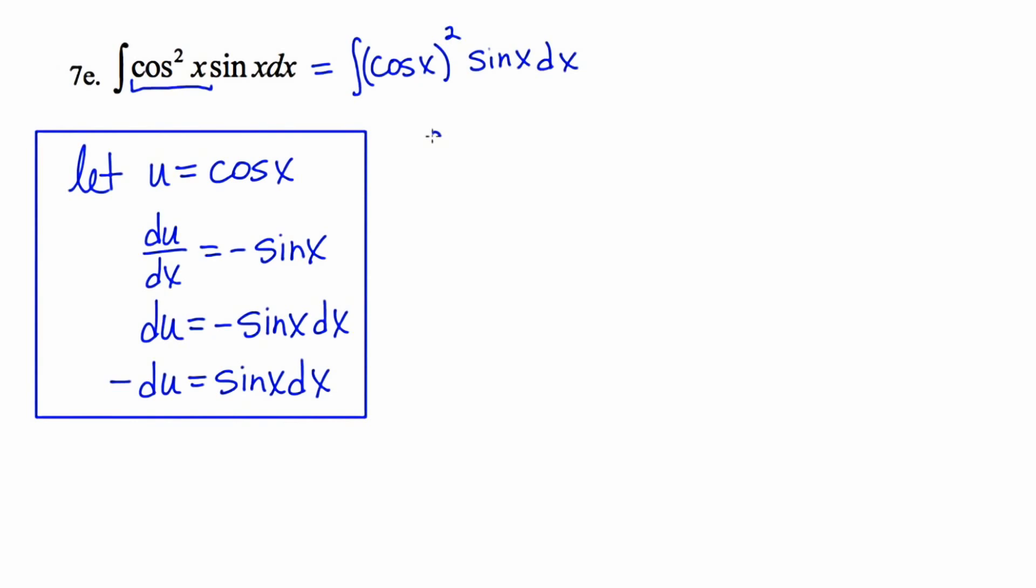Now I think I'm ready to rewrite this problem exclusively in terms of u. So instead of cosine x squared, I'm going to write u squared. And I notice that it ends with sine x dx. And this is my sine x dx down here in the bottom of the box. And that is, of course, the same as negative du. And I'll just place that negative on the outside.